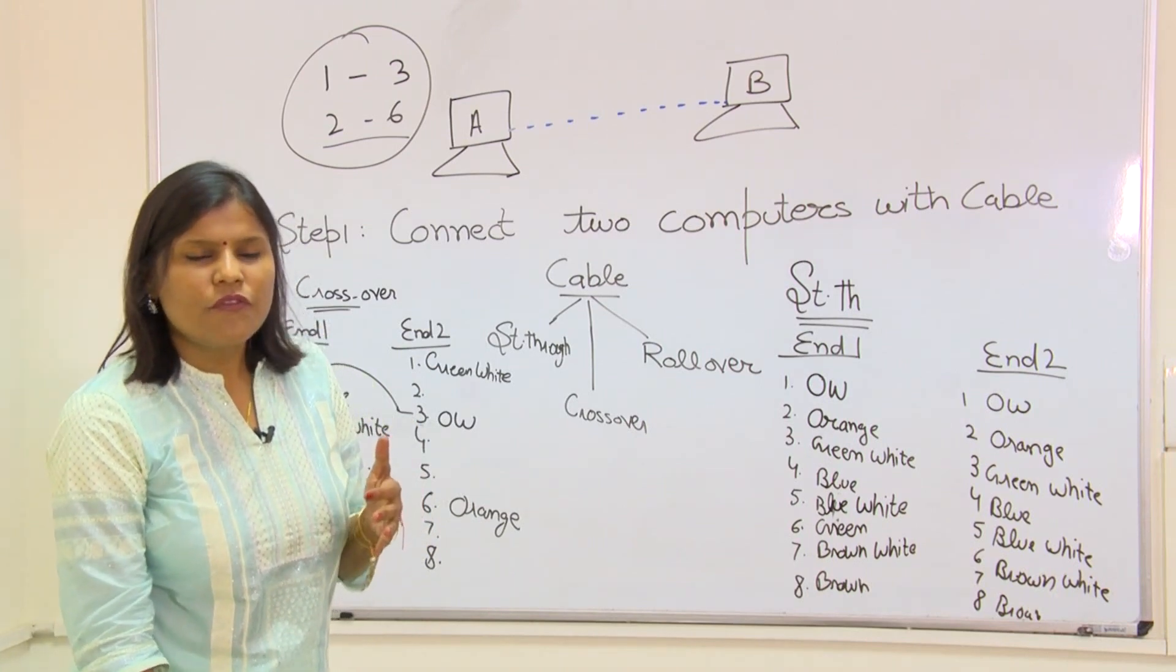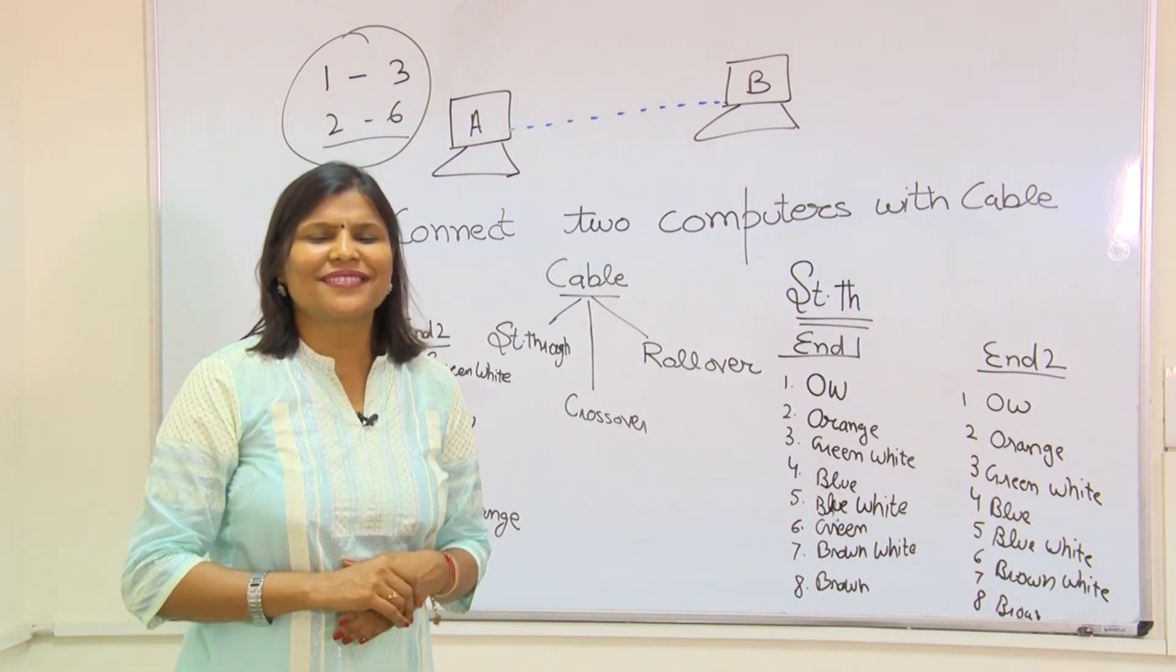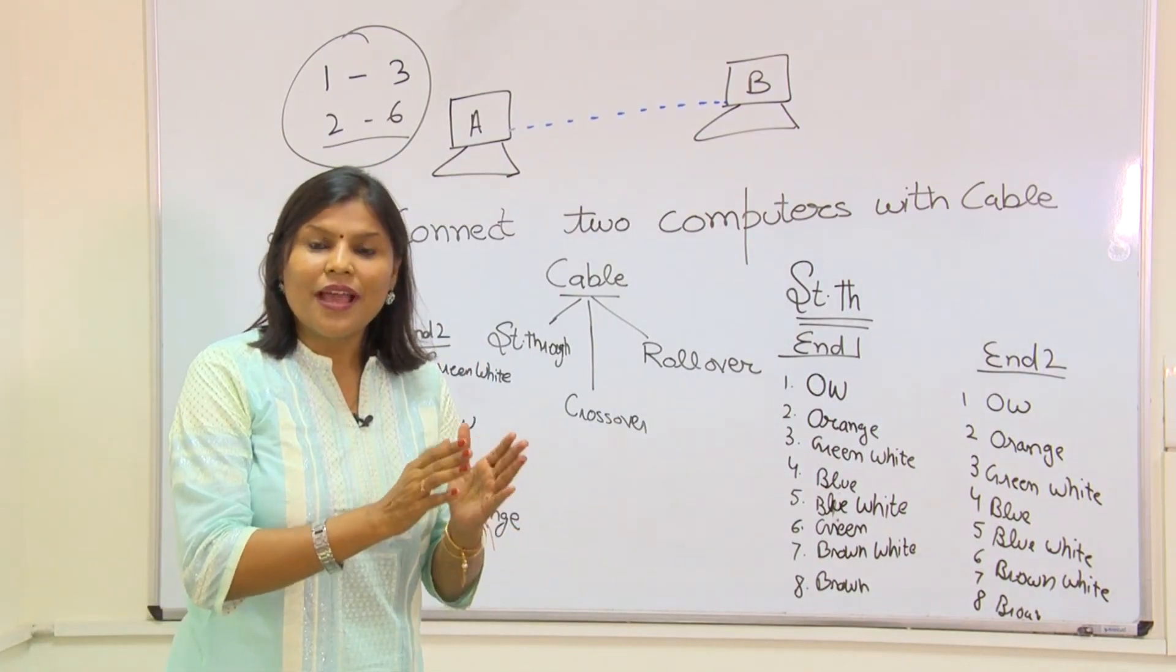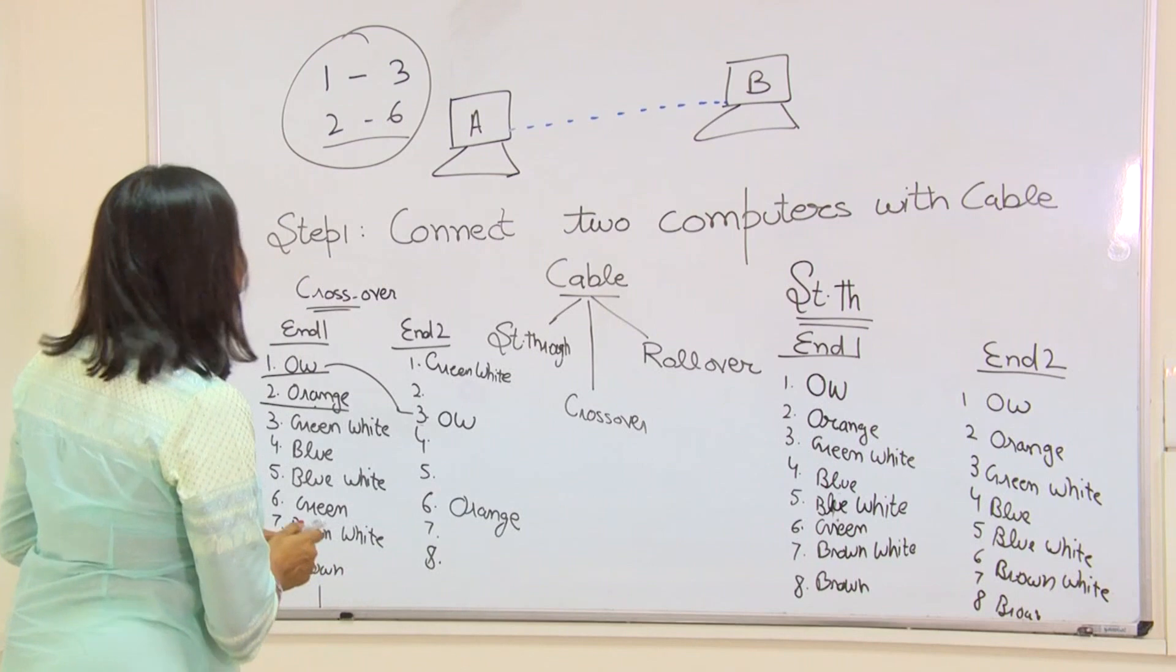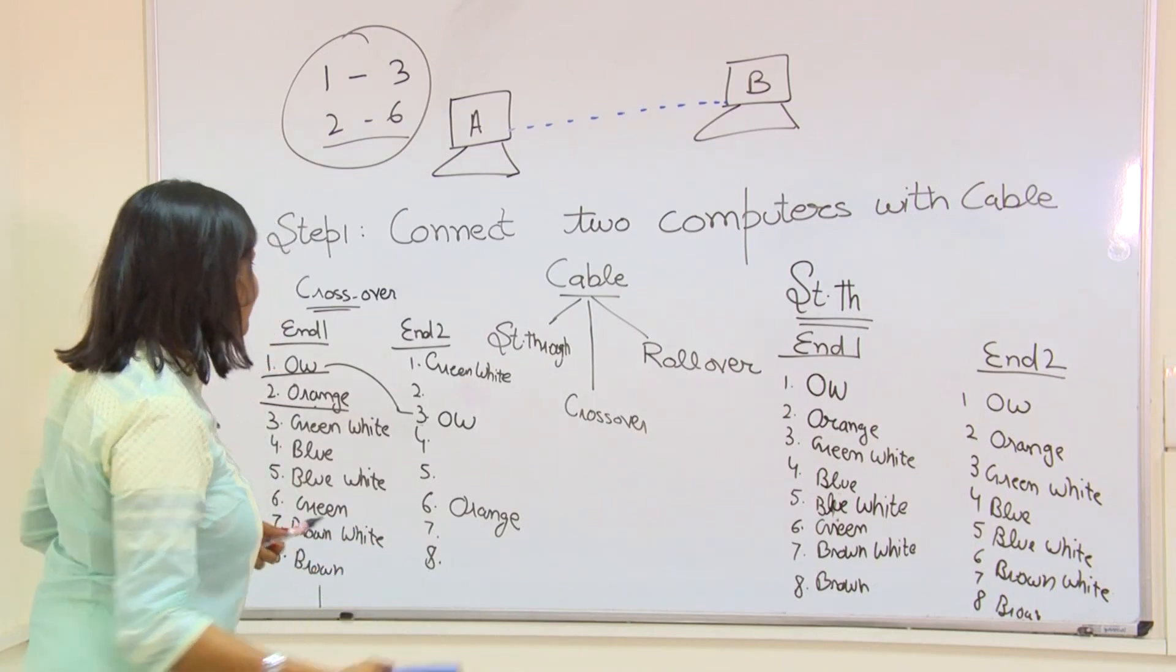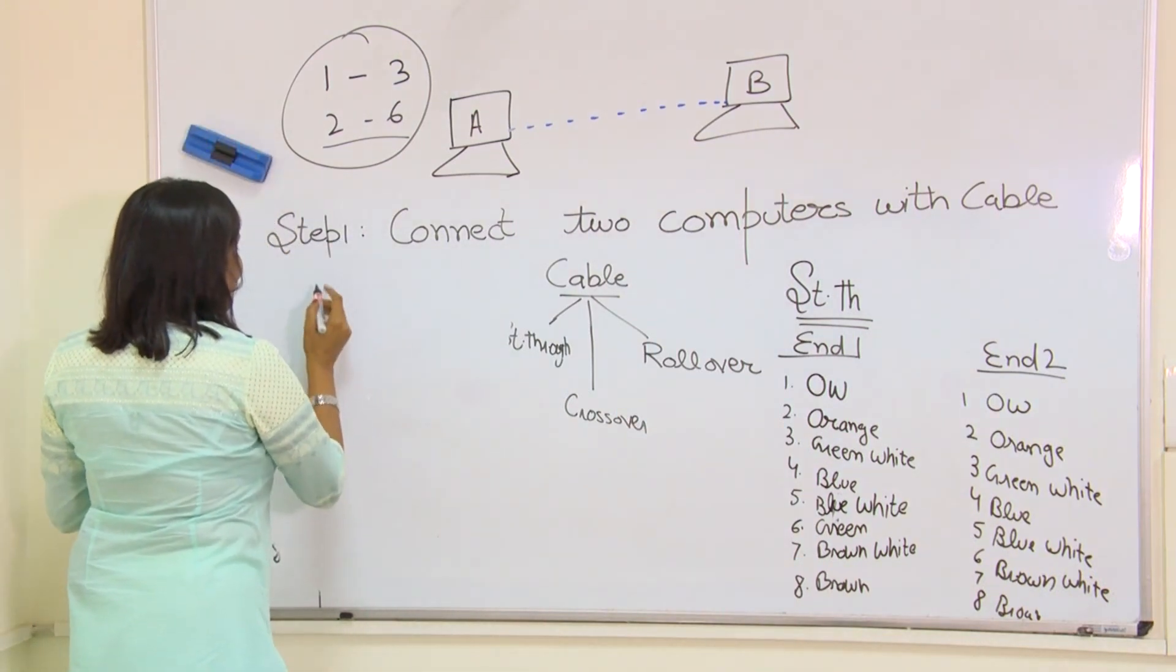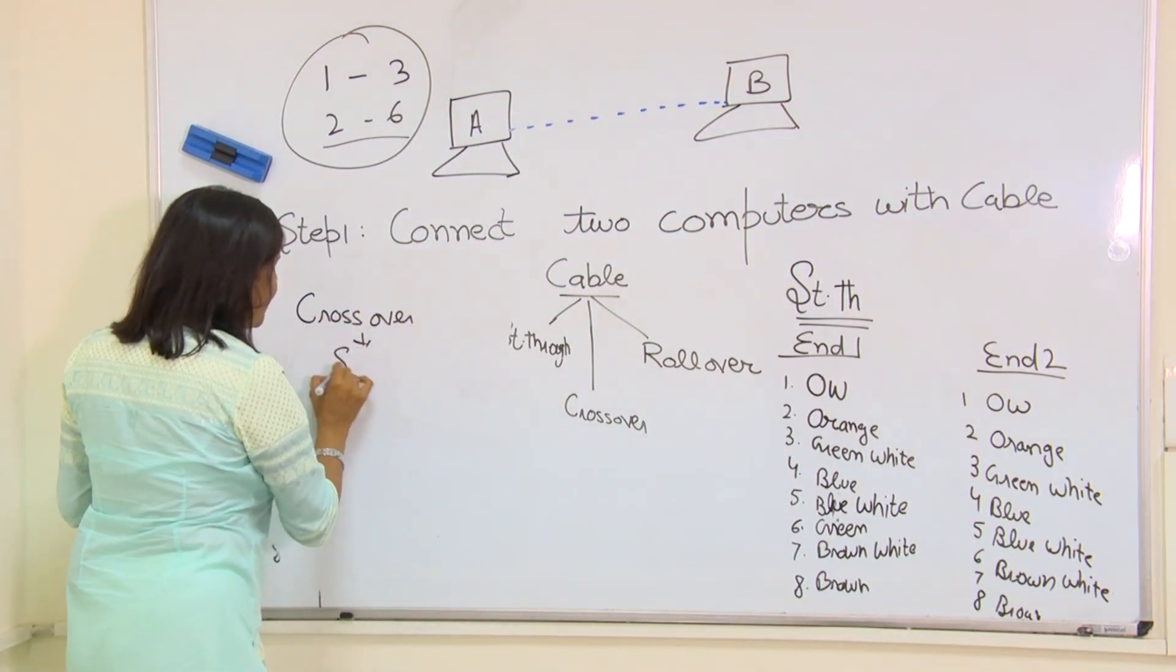Now the point comes, where I need crossover cable and where I need straight through cable? Very simple. Crossover cable is used between similar devices and straight through cable are used between different devices. It sounds something weird, no? Yes, crossover cable, similar devices. Now, what are the similar devices? Crossover for similar devices.